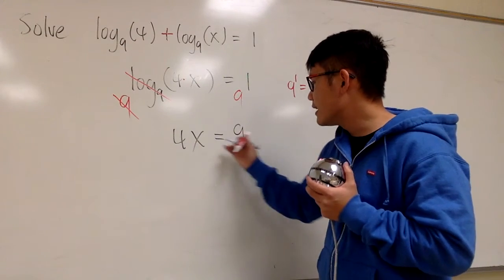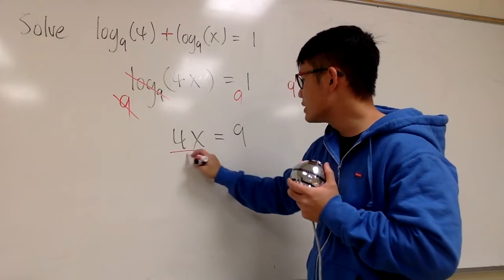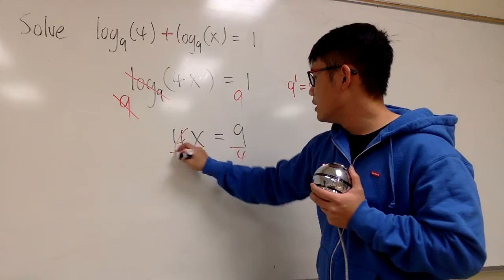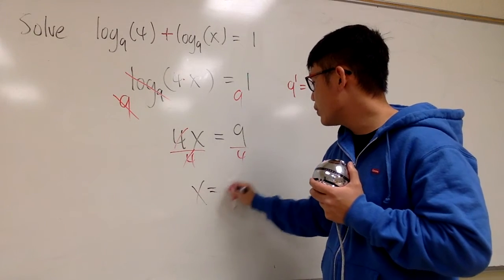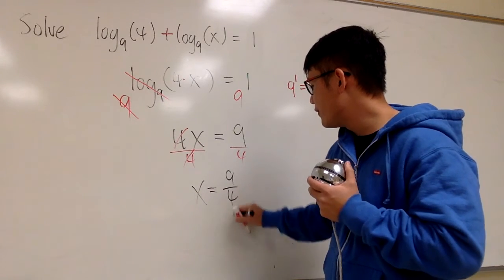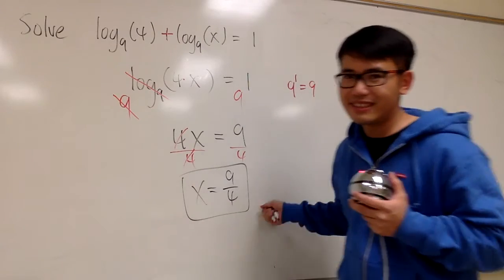And then, 4 times x is equal to 9. Of course, I can just divide both sides by 4. And we are done. Now, x is equal to 9 over 4. That's it.